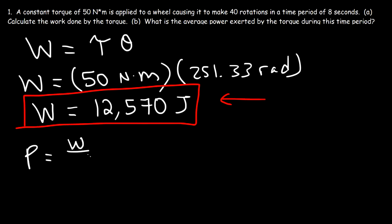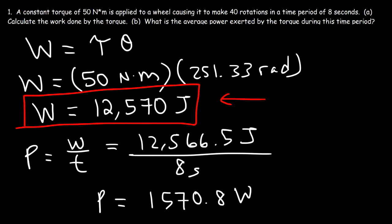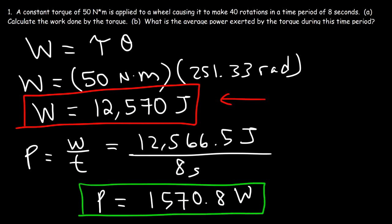Power is work divided by time. The work was 12,566.5 joules — that's the more accurate answer — divided by 8 seconds. So the power is 1,570.8 watts. One joule per second equals one watt. That's how you calculate the average power exerted by a torque: it's simply the work done by the torque divided by the time.